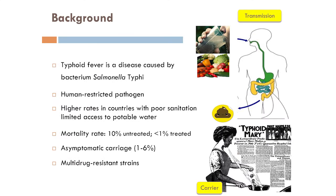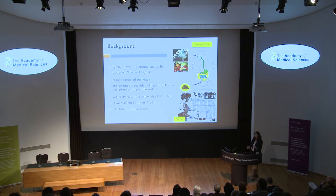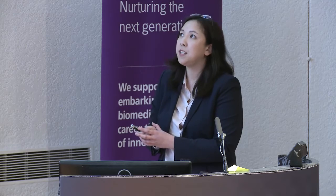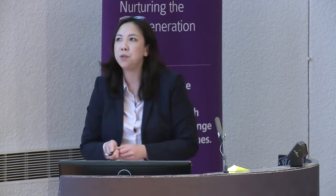A bit of background: typhoid fever is a disease caused by a gram-negative bacterium, Salmonella typhi. It's human-restricted, it only affects humans, and it's spread by the faecal-oral route. You contract typhoid by ingesting contaminated water and also contaminated food, and then you shed the bacteria in the faeces, which goes on to contaminate other water and food and the cycle continues.